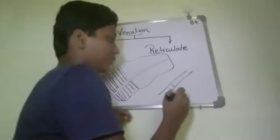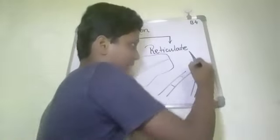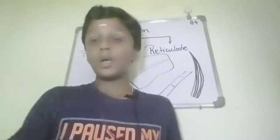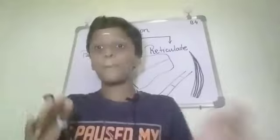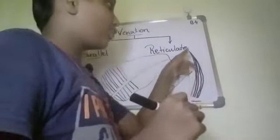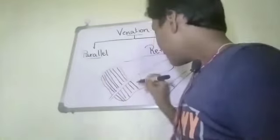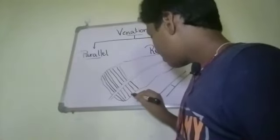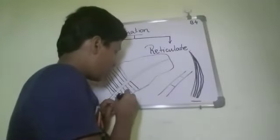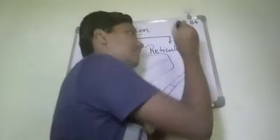For example, if you take normal grass, it has a leaf like this and the venation is like this — one vein, the next vein, another vein. In parallel venation, the veins run parallel to each other towards the tip or the margin of the leaf. In the normal grass plant, the veins move towards the tip of the leaf. But when you take the banana leaf, you can see that each vein points towards the margin of the leaf.